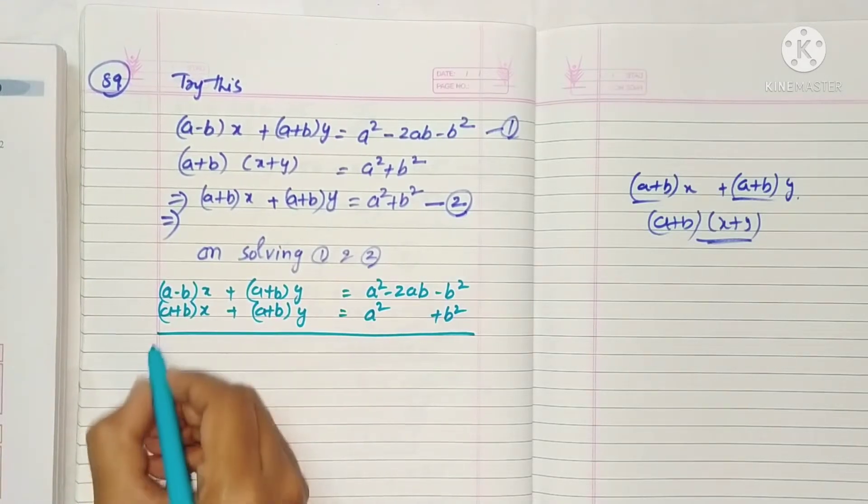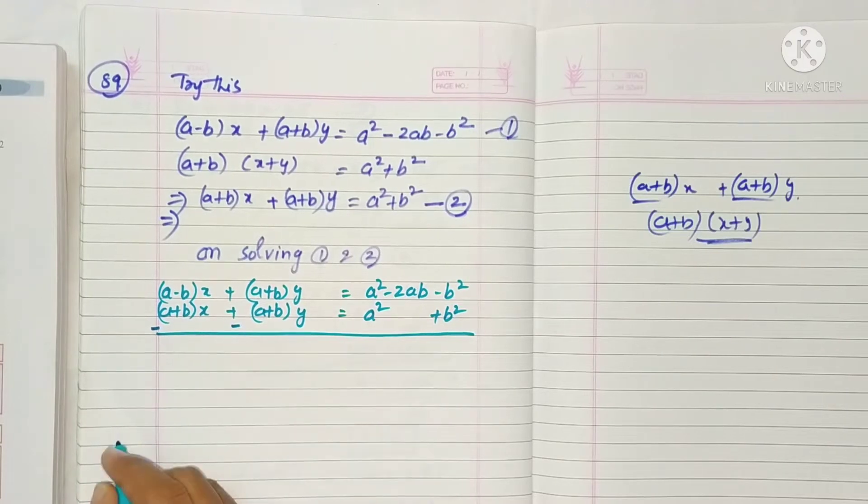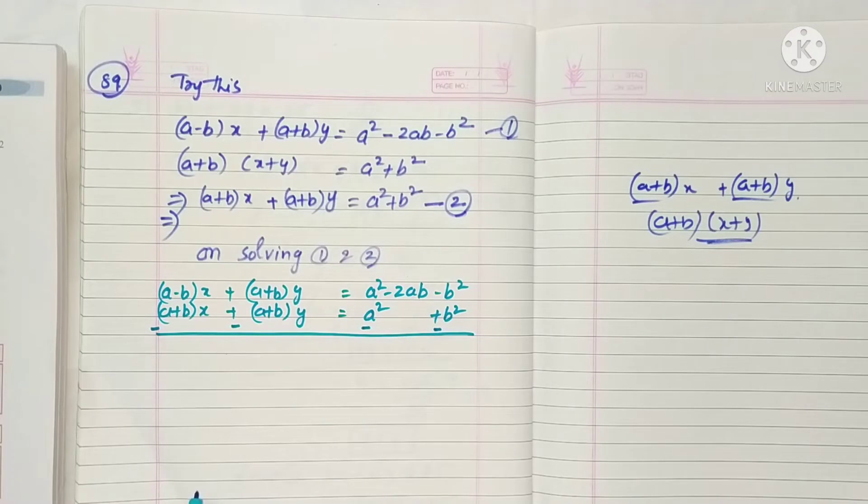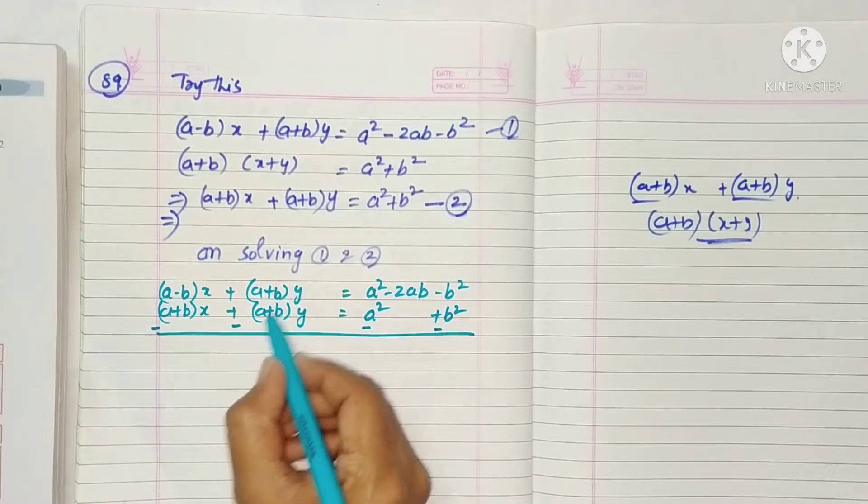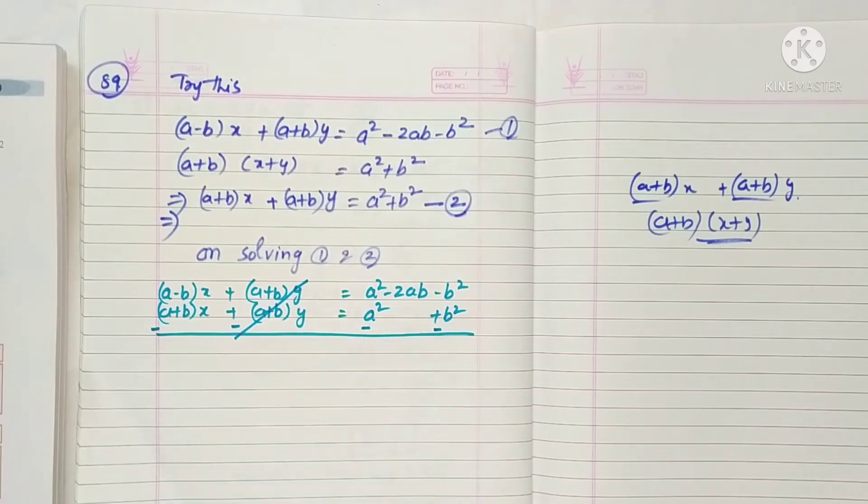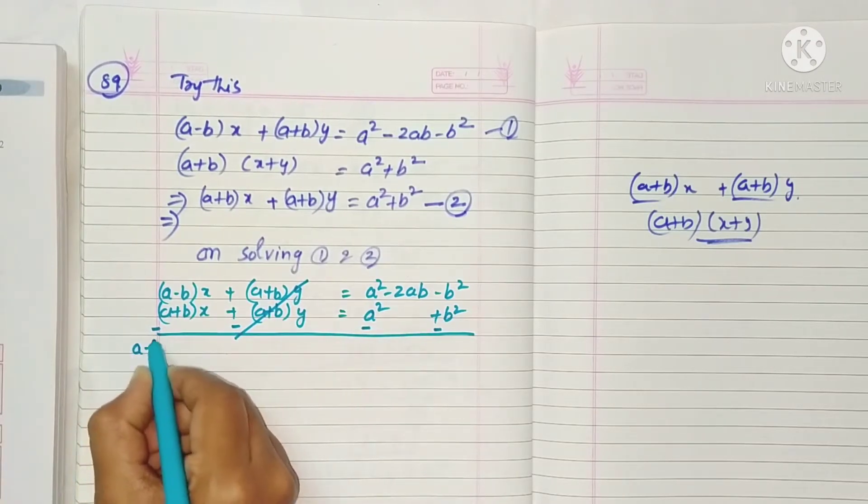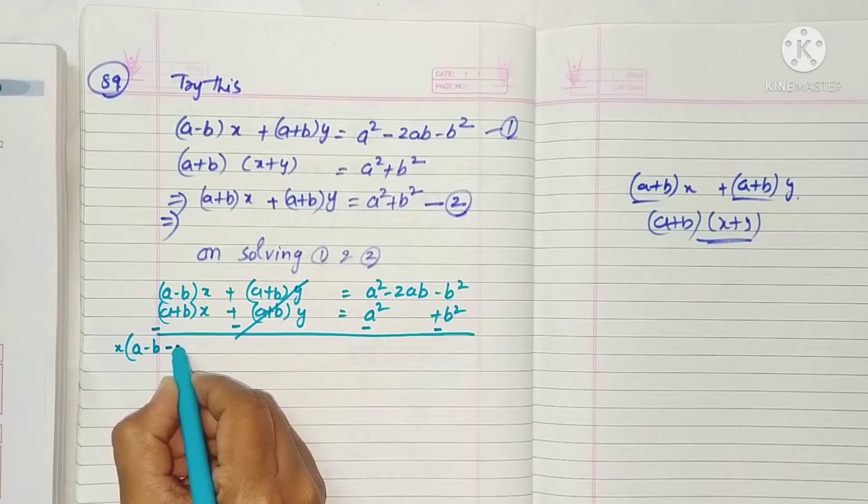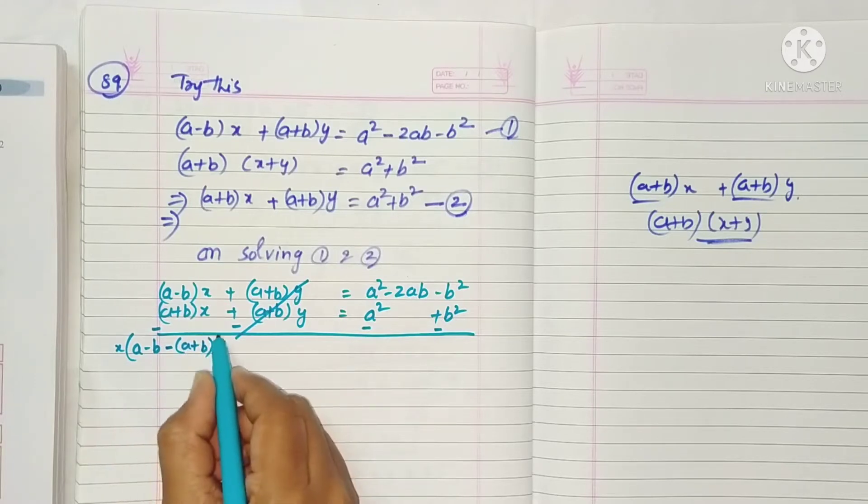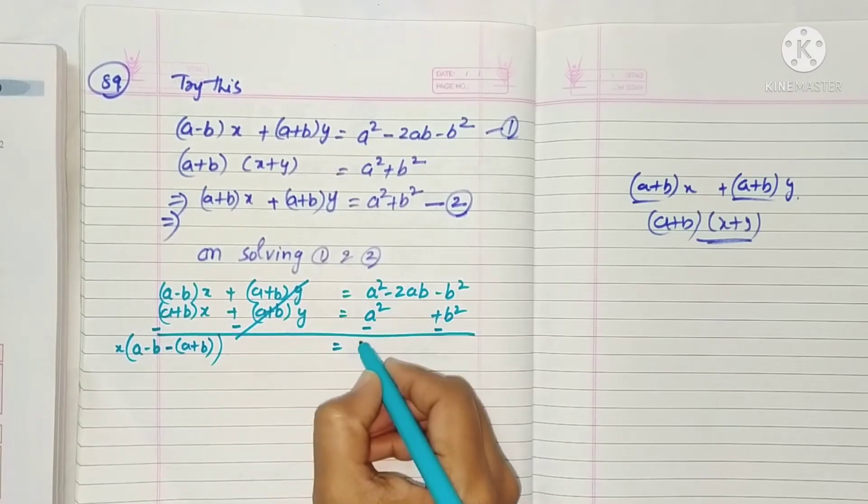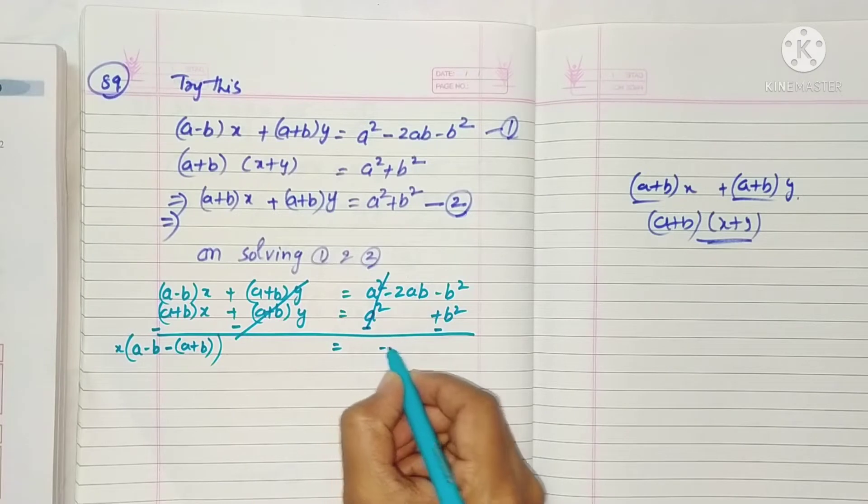Now what is our first step? We have to change the signs: minus, minus, and here minus, minus. Plus minus for the same terms, so just cancel. That means if we subtract we will get zero here. (a-b)x will be common, (a-b) minus of (a+b)x is equal to plus a² minus a² cancel here, minus 2ab here.